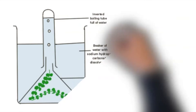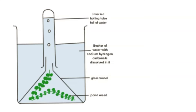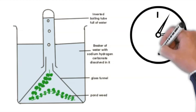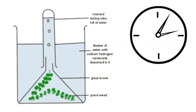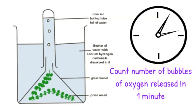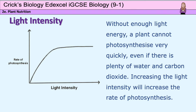Normally it is difficult to measure the rate of oxygen production, but if you use an aquatic plant such as this pond weed, you can see the bubbles of oxygen released from the stem. By counting how many bubbles are released per minute, it gives us an indication of the rate of oxygen production and therefore the rate of photosynthesis. As light intensity increases, the rate of photosynthesis should increase too, as there is more light energy available to be converted into chemical energy and glucose.